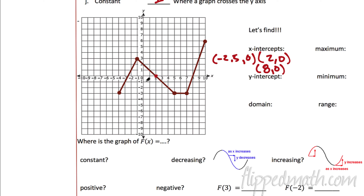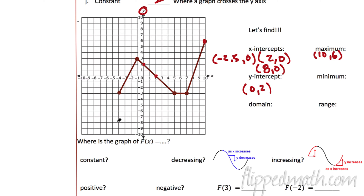The maximum value — look at the graph, where's the highest point? The highest point is right here, and that occurs at x equals 10. So I'm going to write that as a coordinate point: (10, 6). The y-intercept — where it crosses the y-axis. Here's the y-axis; it crosses right here at (0, 2). So I just need to write that as a coordinate point.